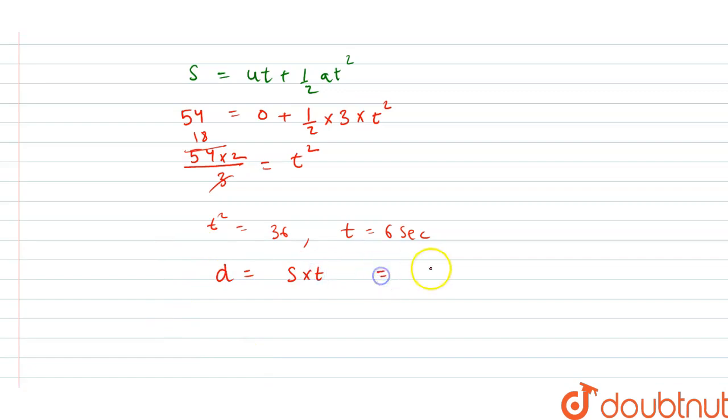And this is equal to - speed is given as 20 feet per second, so 20 times 6, this is equal to 120 feet.